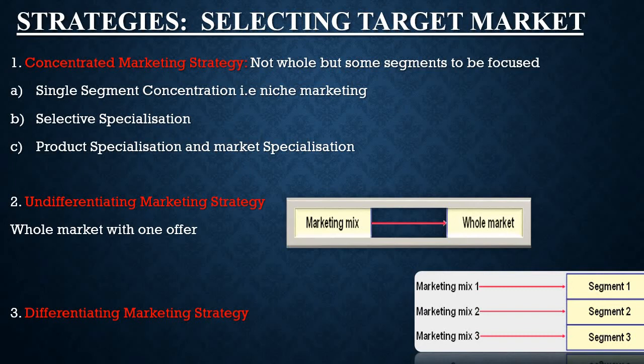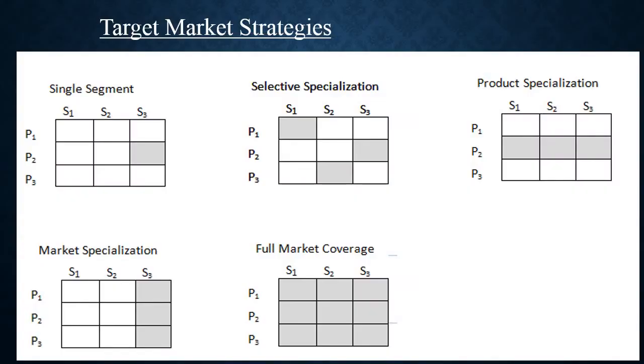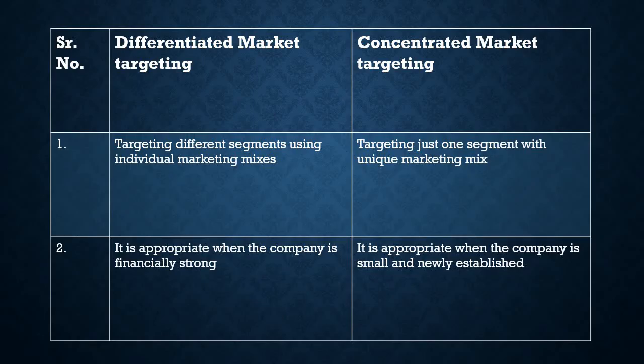The third strategy is differentiated marketing strategy, where every segment is offered a different marketing mix. Marketing mix stands for the 4 P's — product, price, place and promotion. So every segment is considered crucial and a different marketing mix is offered in each segment. Targeting different segments using individual marketing mixes is known as differentiated market targeting, while targeting just one segment with a unique marketing mix is known as concentrated market targeting.